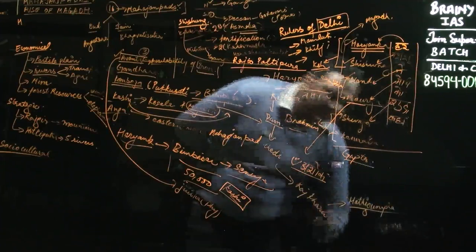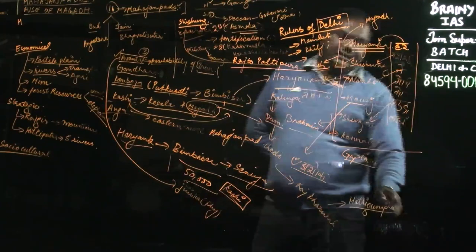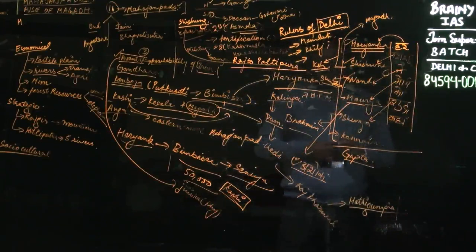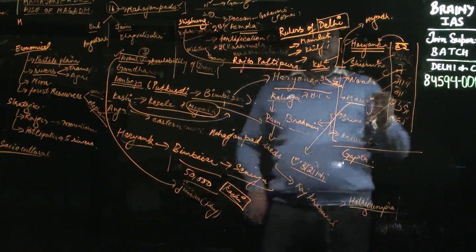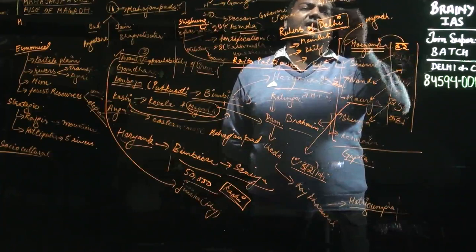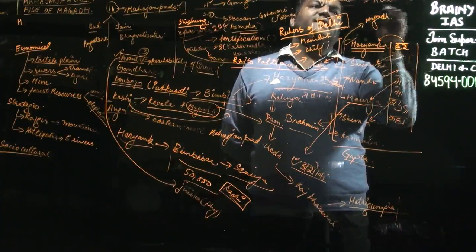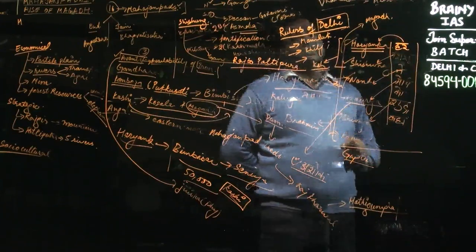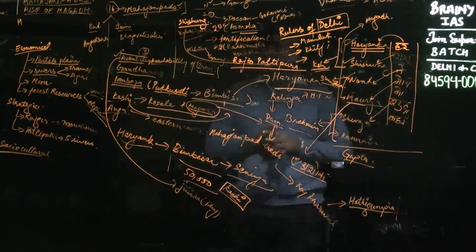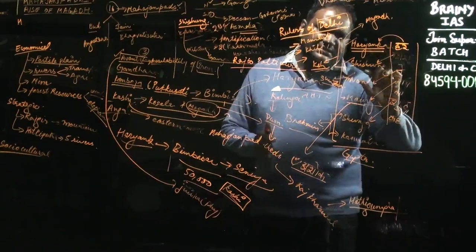The next is Dhanananda. Dhanananda is important because when Alexander invaded India, at that point of time Dhanananda was the ruler. So after this we have covered the Haryanka dynasty, Shishunaga dynasty, and Nanda dynasty. Now we are into the Mauryas.